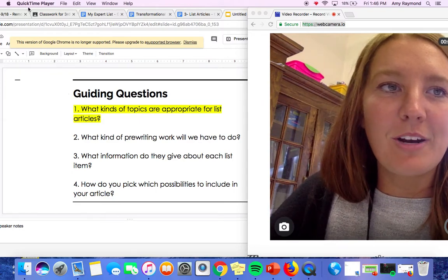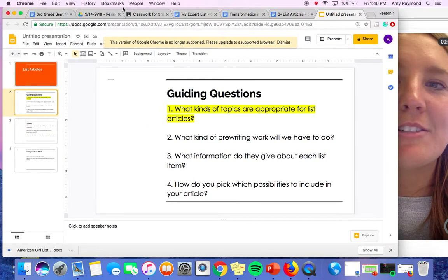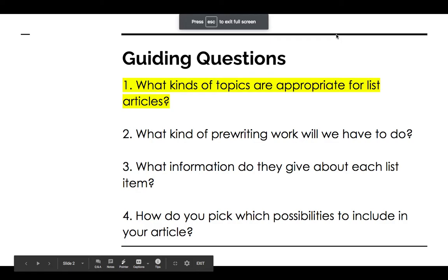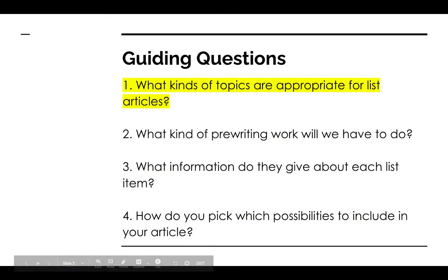So we've already read a few examples together, and you've looked at a few examples as well. Some of these topics have included what to bring when you go camping, what are some fun things to do during the summer, and different types of bizarre beaches. The person who wrote about things to bring camping knew a lot about camping before he started writing that list article. He was able to give a lot of information and details about the things that you need to bring when you go camping.